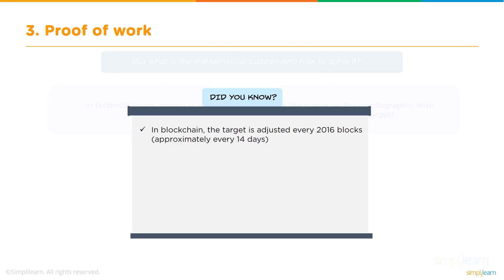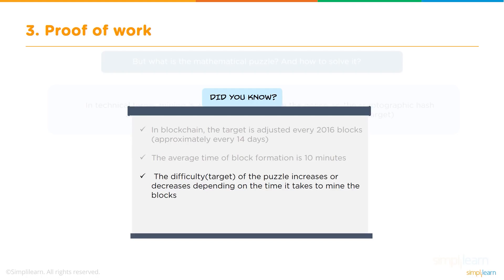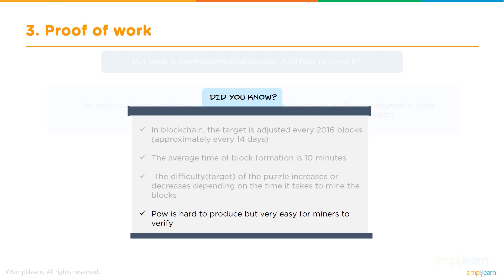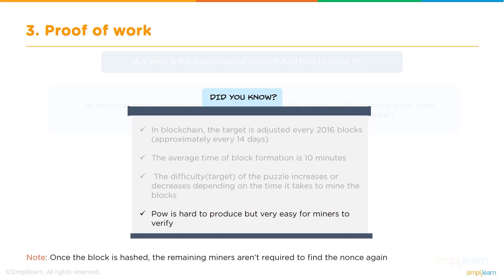In blockchain, the target is adjusted every 2,016 blocks, which is approximately every 14 days. The average time for block formation is 10 minutes, and the difficulty target increases or decreases depending on how long it takes to mine the blocks — the network fluctuates the difficulty based on mining time. Proof of work is hard to produce but very easy for other miners to verify. Once a block is hashed, the remaining miners only need to validate the work; they are not required to find the nonce again. The miner who earns the bitcoin has done the hard work, while the others on the network just verify the validation.